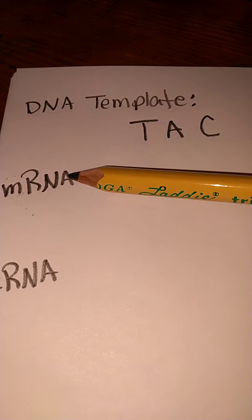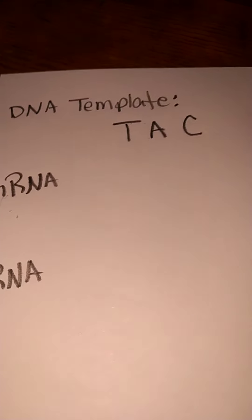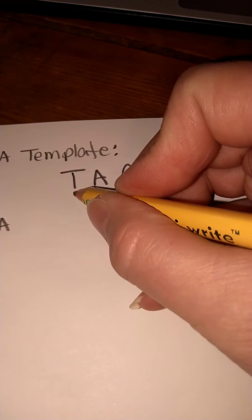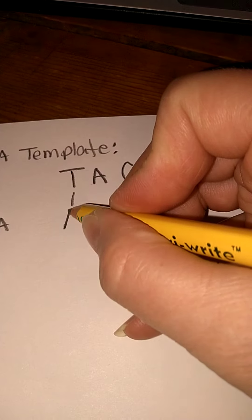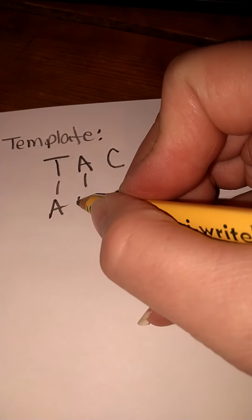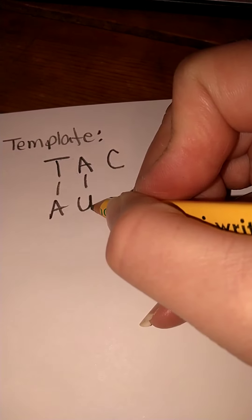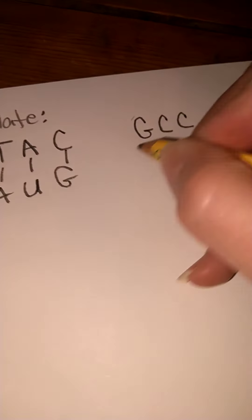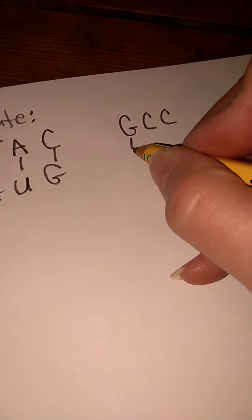We need to remember when we're doing RNA that there are no T's in RNA. So if we have a T in our DNA, T is going to attach to A. A, there's no T's so this time it's going to be a U. A is going to attach to a U. C with G. G with C. C with G.